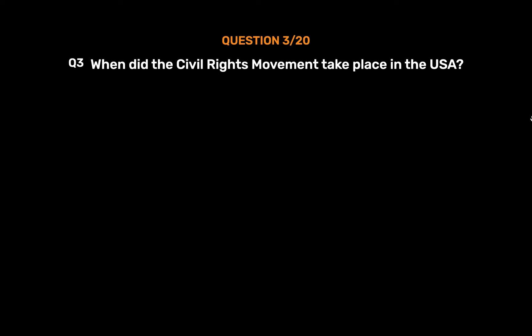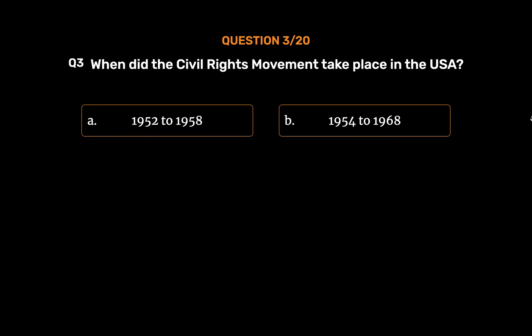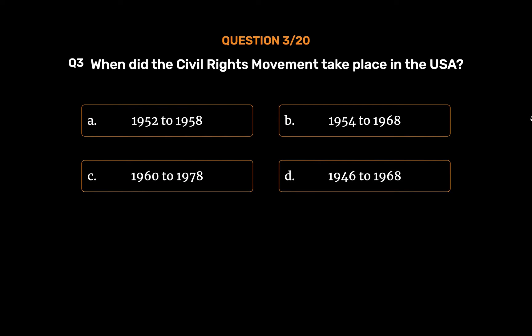Question number 3. When did the civil rights movement take place in the USA? Option A: 1952–1958. Option B: 1954–1968. Option C: 1960–1978. Option D: 1946–1968.